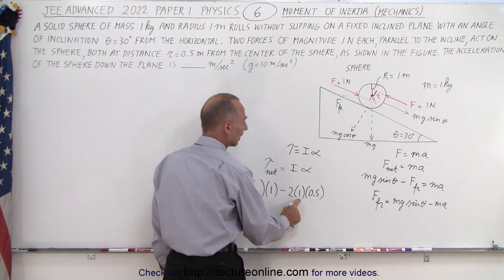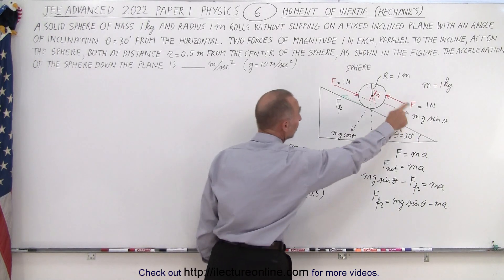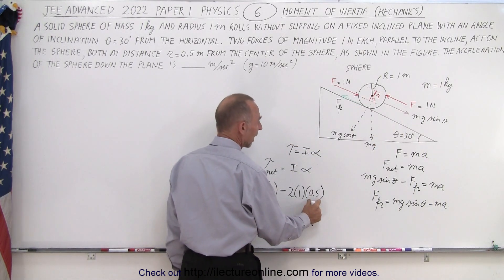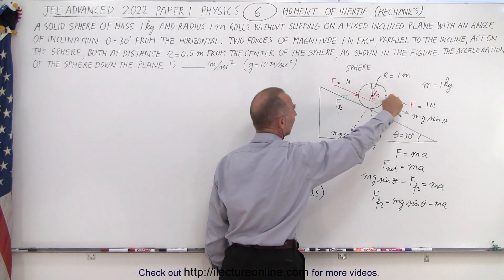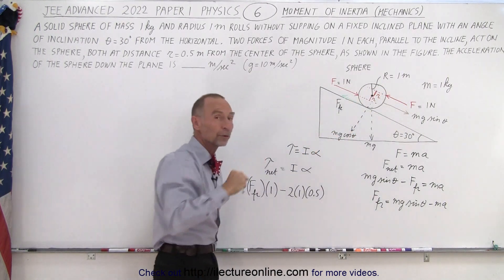So, it's two forces acting of one newton each. So, two times one newton times 0.5 meters, which is the distance from the line of action of each of those forces to the point of rotation.